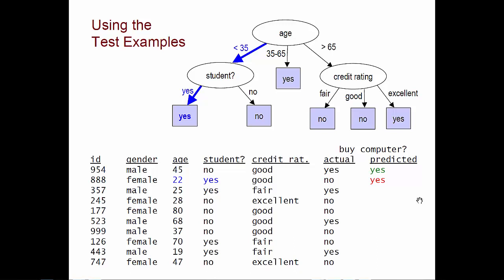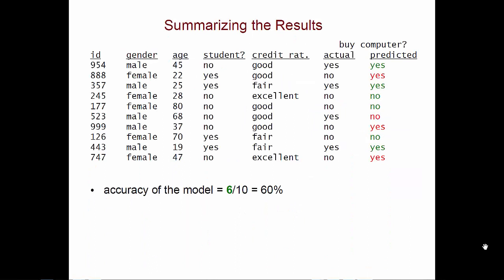We just keep doing this for all of our test examples. We see that it gets six of the examples correct. If the customer actually bought a computer, the model predicts yes. If the customer did not, the model predicts no. Those are the green values here, the ones that it got correct. But it gets four of them wrong. In addition to this second row, here's another example: the customer actually did buy a computer, but the model predicts that the customer would not buy it.